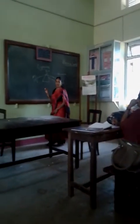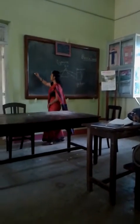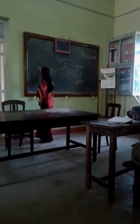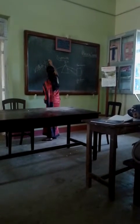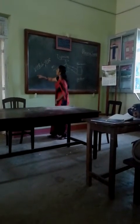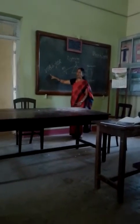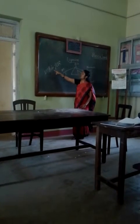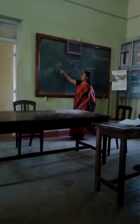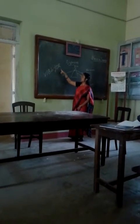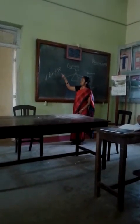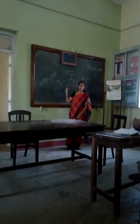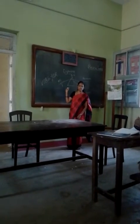These colors can be denoted as VIBGYOR. That is, violet, indigo, blue, green, yellow, orange, red. These are the colors formed as a result of this dispersion of light.